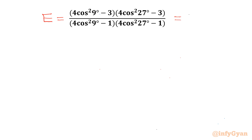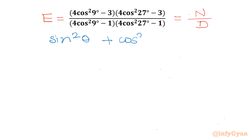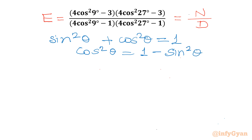E equals numerator over denominator. We will be simplifying numerator and denominator separately, beginning with the most powerful trig identity: sin²θ + cos²θ = 1. From here we can write cos²θ = 1 − sin²θ. Let us apply this in the denominator first.